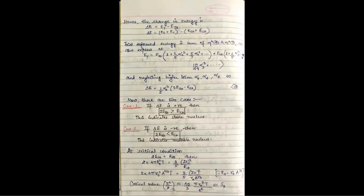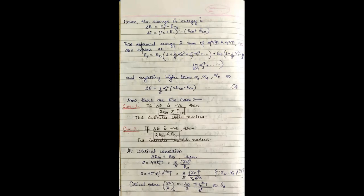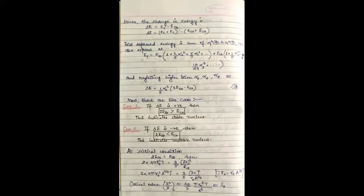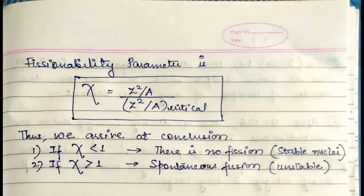The critical condition becomes when 2 ES0 equals EC0. In that condition we solve it further and we get Z square by A critical is approximately equal to 40 pi R naught cube times capital T upon E square or it is approximately equal to 50.